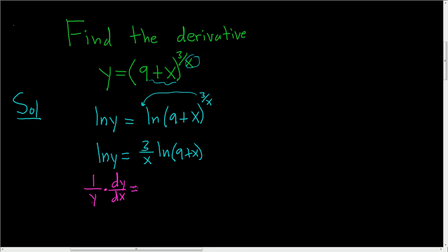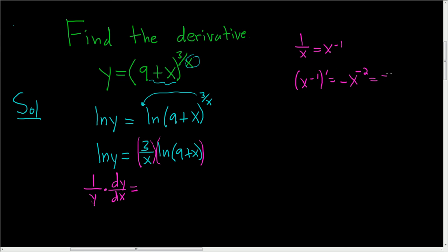On the right side we have to use the product rule. The derivative of 3 over x — if you write 1 over x as x to the negative 1, then taking the derivative brings down the negative 1 and subtracts 1 from the exponent, giving negative 2, so you end up with negative 1 over x squared. With the factor of 3, the derivative of 3 over x is negative 3 over x squared.